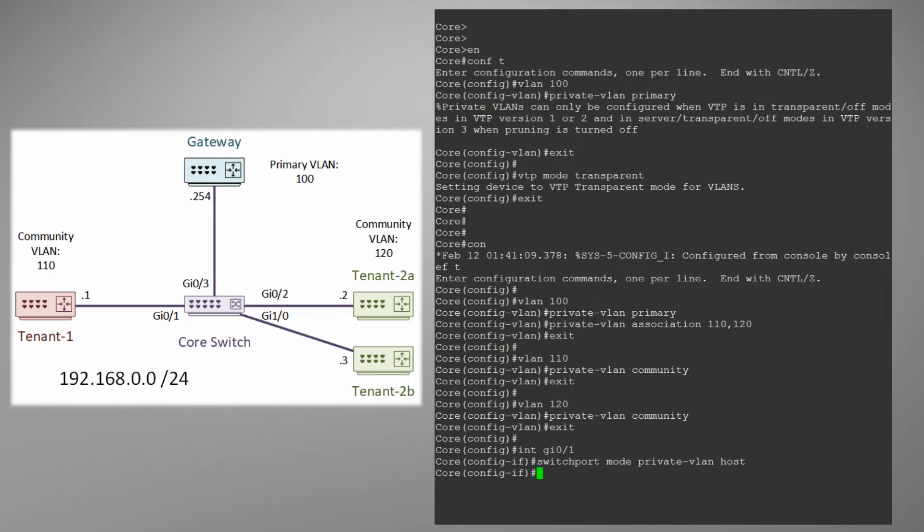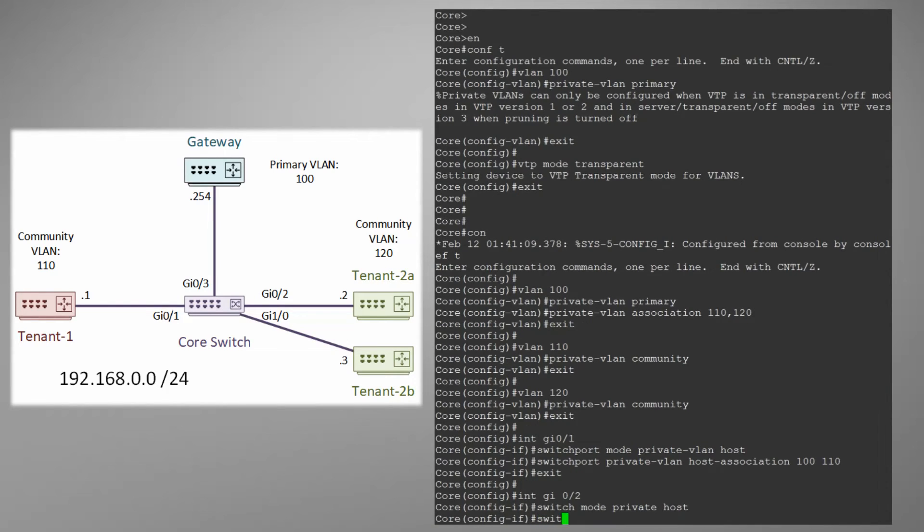This just means that this is a host port on a private VLAN. The only other thing to do is set an association. This associates or maps the host's VLAN with the primary VLAN. Tenant 2's port configuration is nearly identical. We just have a different secondary VLAN.